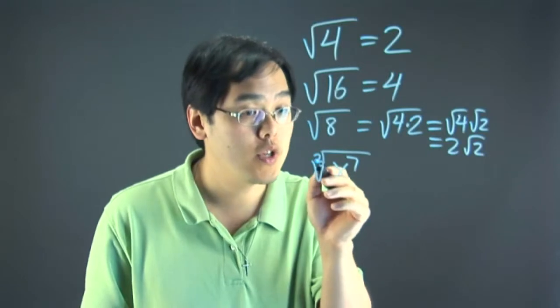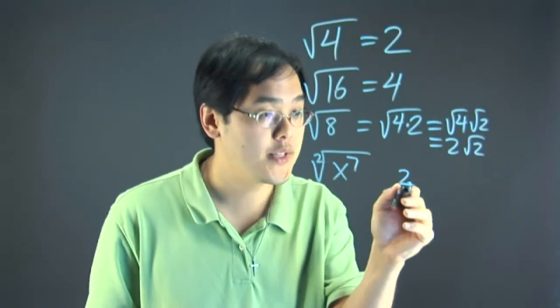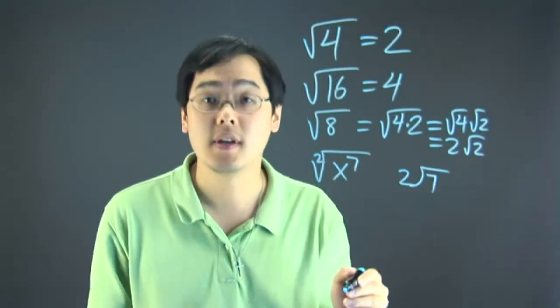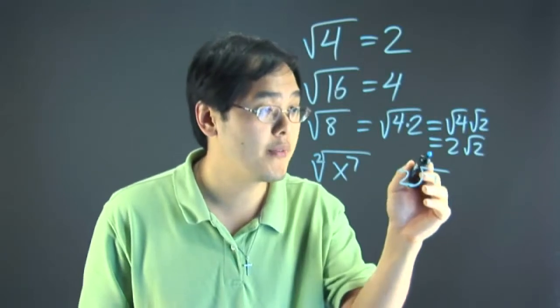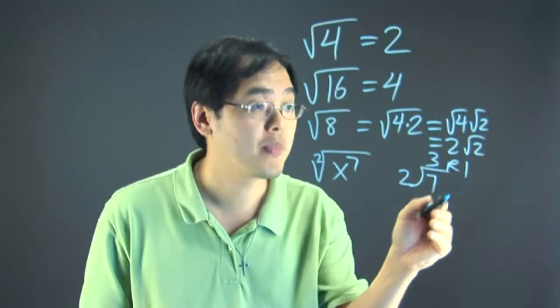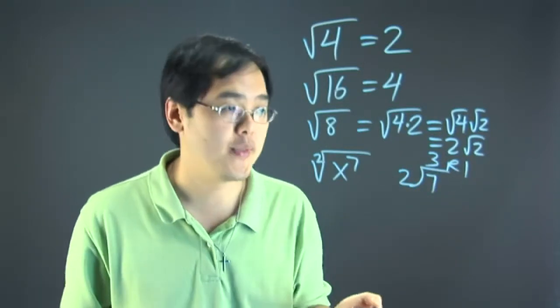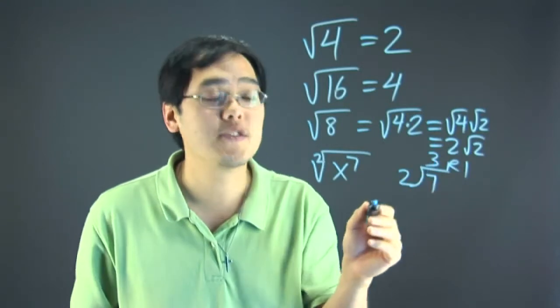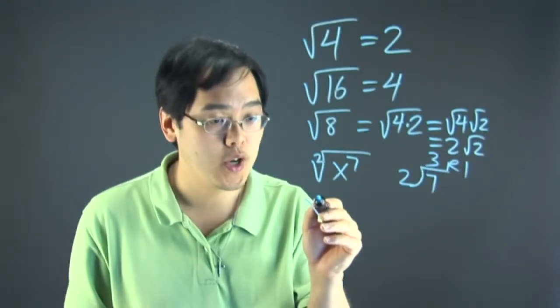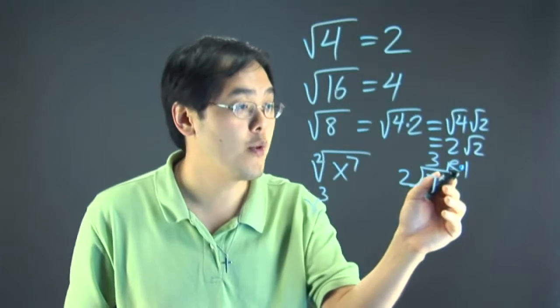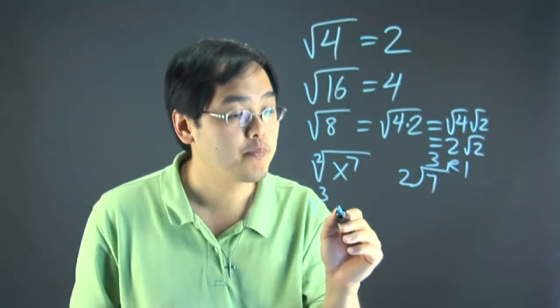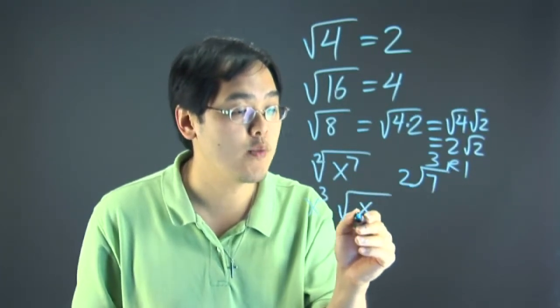What you do is you take the 2 on the outside and you divide into the exponent 7. As you know, 2 goes into 7 three times remainder 1. The fascinating part about this is the 3 gives you the exponent for x that goes outside the radical, and the remainder is the exponent of x that stays in the radical.